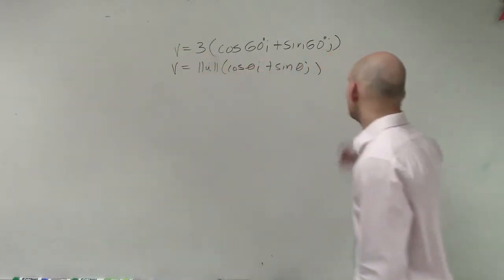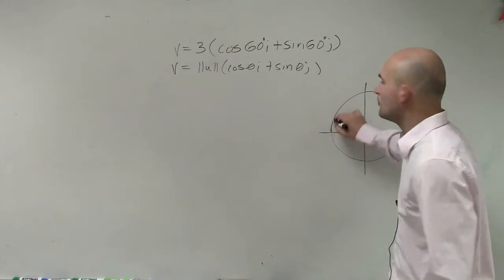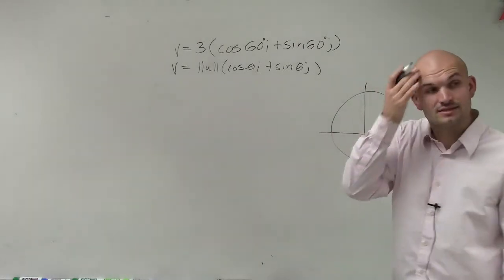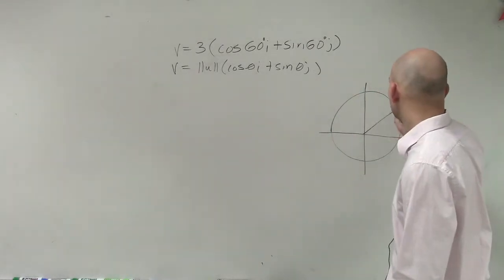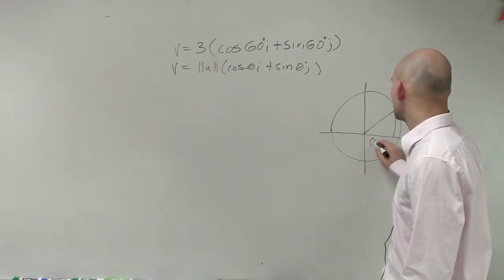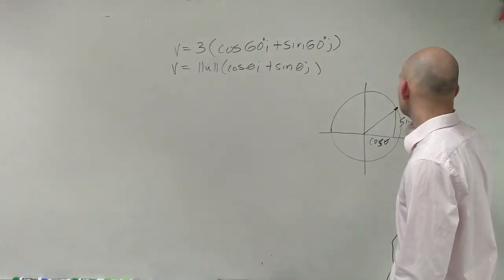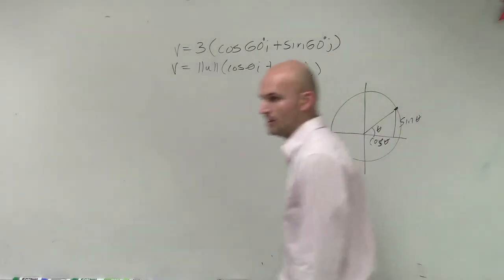And where do we get cosine and theta? Well, from looking at the unit circle, remember when we were able to create a unit vector, we knew that the x or the v1 first coordinate was cosine of theta, and this was sine of theta. So here was your theta.